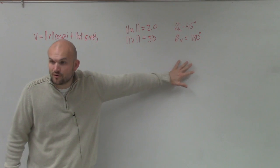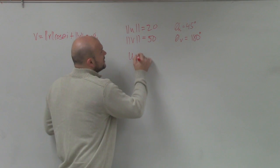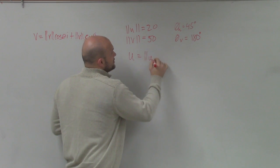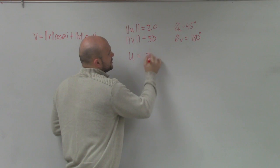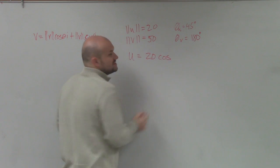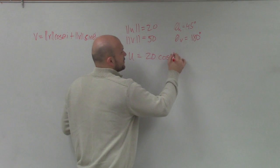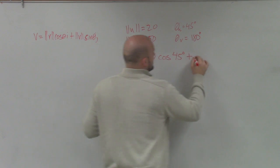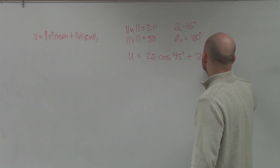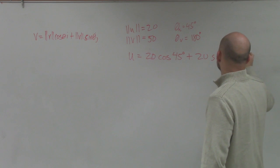So let's write this in component form. Therefore, u is equal to the magnitude of u, which you already know is 20, times the cosine of our angle u, which is 45 degrees, plus the magnitude of u times the sine of 45 degrees.